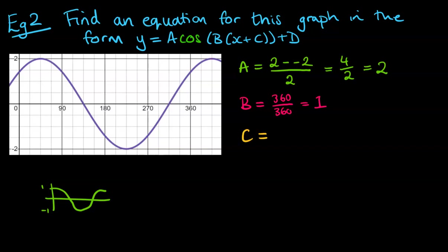Now C being the horizontal shift, we take a look at the original graph started up here at the top at 1. So here's the top of our new graph, and that has gone out to the right by 45 degrees. Now if we go to the right, that means it's a negative 45 degrees.